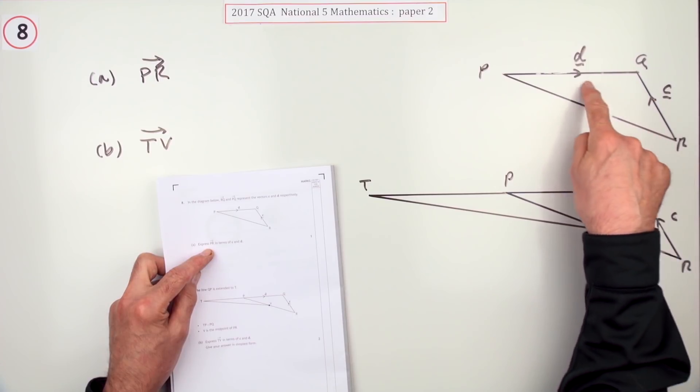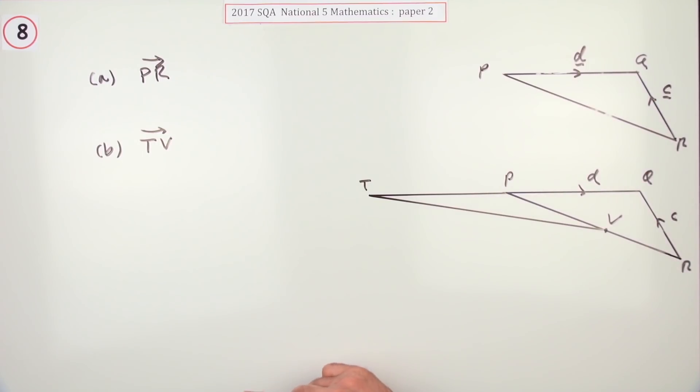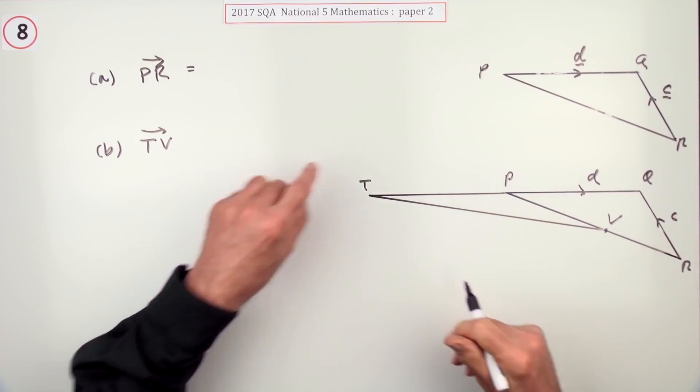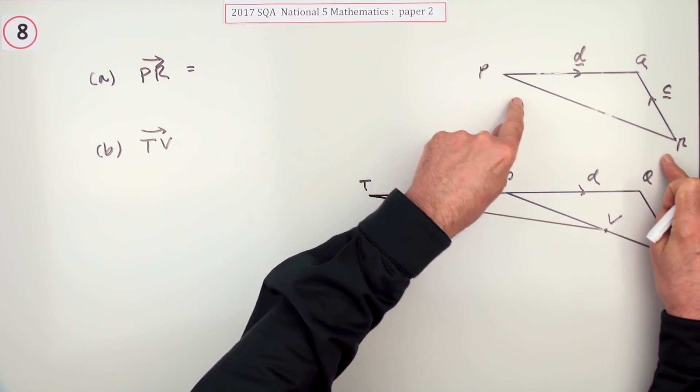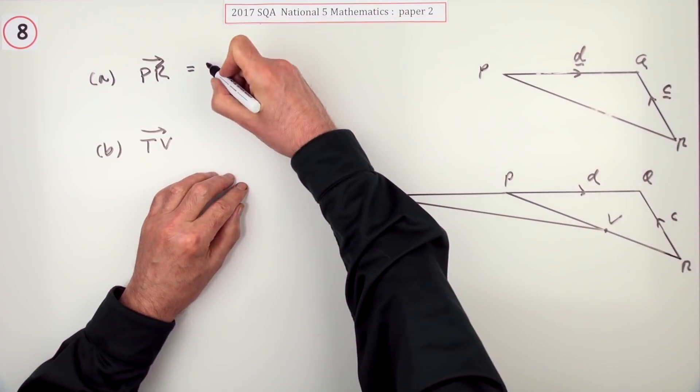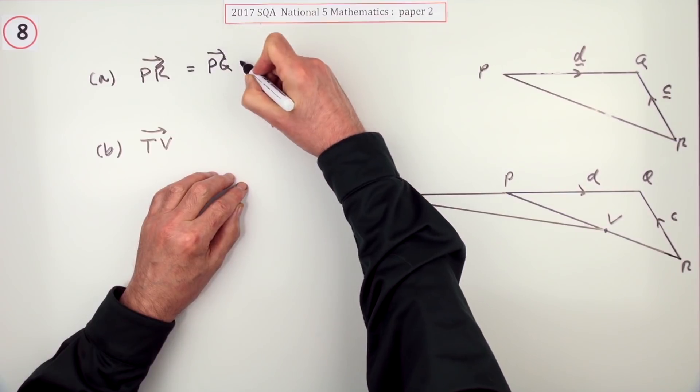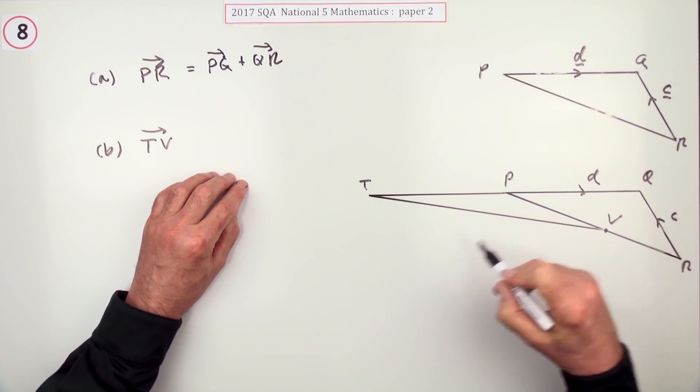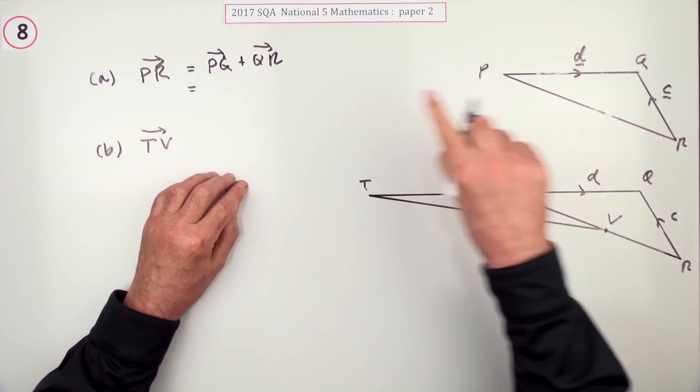So I want to go from P to R in terms of c and d. Now what that means is, to get from P to R, since I don't know PR I can't go along that route. My only route is to go from P to Q and then go from Q to R.